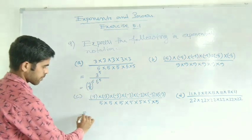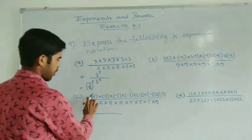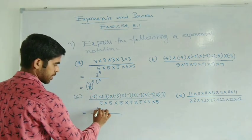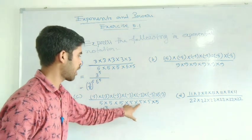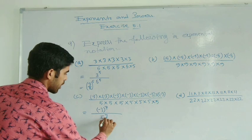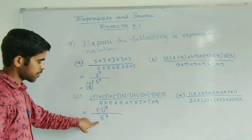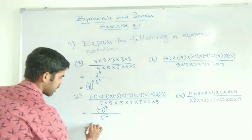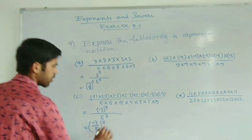This one also you see — how many things are there? 1, 2, 3, 4, 5, 6, 7 — so you write 3 to the power 7. And in the denominator also: 1, 2, 3, 4, 5, 6, 7 — so here also 5 to the power 7. Now see there: the base is minus 3 and there is 5, so bases are different. Then you can write this as 3 by 5, bracket to the power 7.